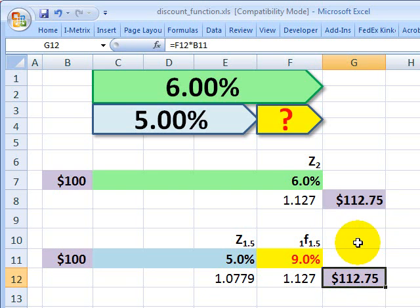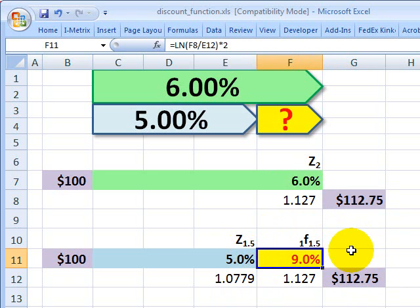And I get $112.75. Matches the terminal value. In this case, they're both a little bit higher than what I got on the discrete compounding, but the essential mechanics were the same. I'm able to use that 2-year spot and that 18-month spot to solve for the implied 6-month forward that starts in 18 months.